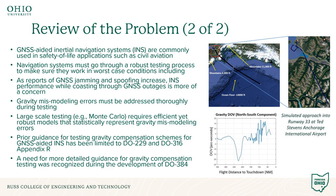In civil aviation, GNSS aided inertial navigation systems are commonly used. When GNSS is present, INS errors such as those caused by gravity mismodeling can be estimated and corrected. However, the navigation system must be able to coast during GNSS outages while still providing integrity.